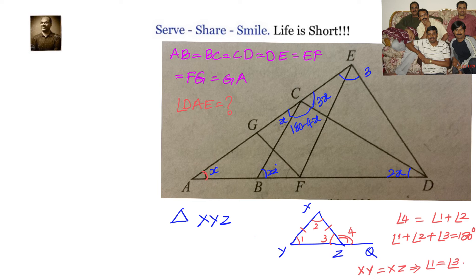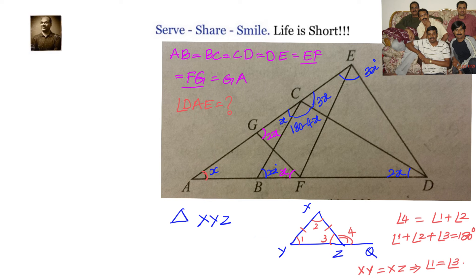Now let's use the last condition: FG equals GA. Since angle DAE, or angle GAF, equals X and FG equals GA, the base angles are equal, so angle GFA also equals X. Applying the exterior angle property, angle FGE equals 2X. In triangle GFE, since EF equals FG, base angles are equal. This tells us angle CED, which is 3X, is divided into two parts: 2X and X.